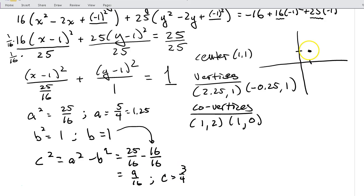So then I'm going to go from my center to the left and to the right. So if I'm at 1 and I go to the right 3/4, I'm going to be at 1.75, 1. And if I go to the left 0.75, I'm going to be at 0.25, 1. So there's my foci.